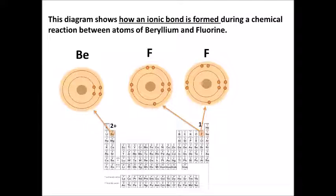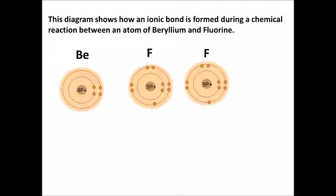When beryllium atoms and fluorine atoms form ions, beryllium atoms form ions with a positive two charge, while fluorine atoms form ions with a negative one charge. The beryllium atom in its nucleus has four protons; each fluorine atom in its nucleus has nine protons. They certainly have neutrons also, but we don't care about those at this point.